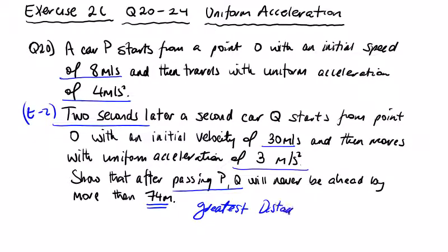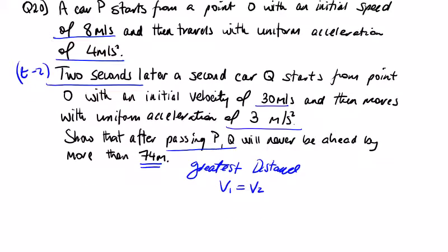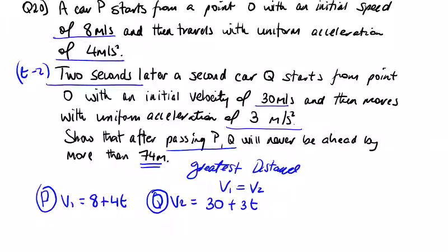The greatest distance occurs when the velocities are equal. So if we take P to be V1, we're going to get U, which is 8, plus AT, which is 4T. If we take Q to be V2, it's going to be equal to 30, initial 30, plus 3T. So when are these velocities equal, or what time are these velocities equal? 8 plus 4T would have to be equal to 30 plus 3T.